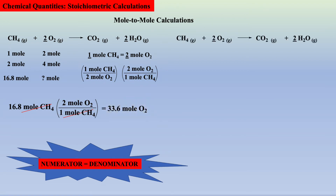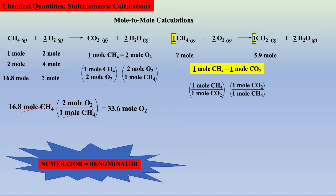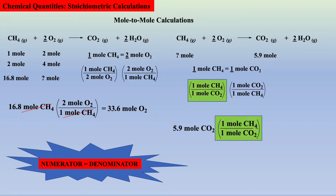In the next example, 5.9 moles of carbon dioxide were collected. How many moles of methane were combusted? The equivalent statement that allows conversion from moles carbon dioxide to moles methane is derived from the stoichiometric coefficients of the balanced equation: one mole carbon dioxide will form when one mole methane is combusted. Thus, two conversion factors can be written from this equivalent statement. Starting from the given value, we multiply by the conversion factor that allows moles carbon dioxide to cancel and affords moles methane.